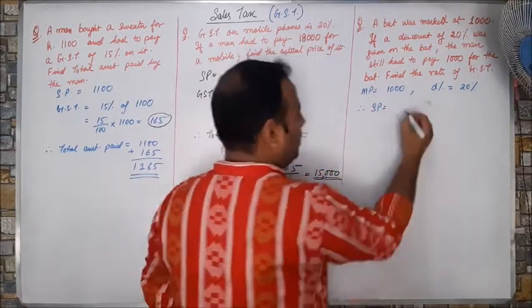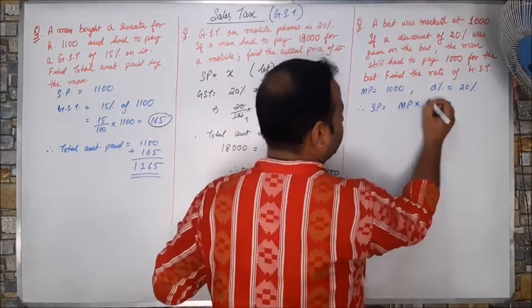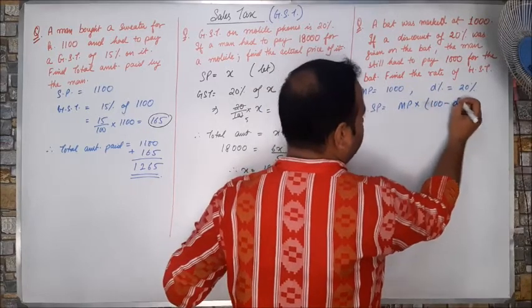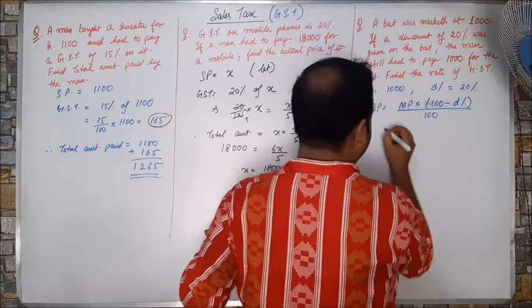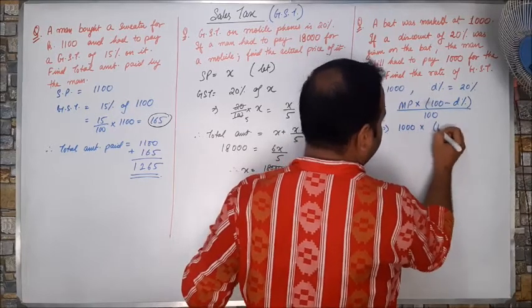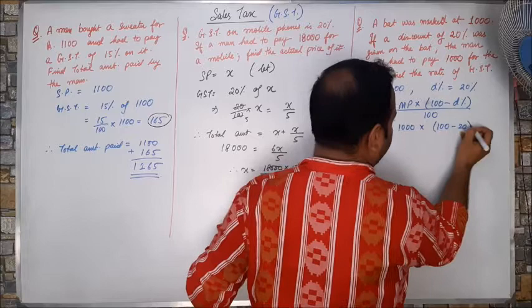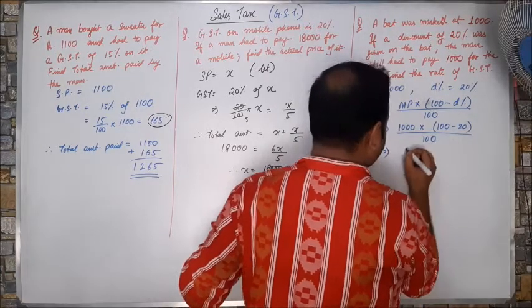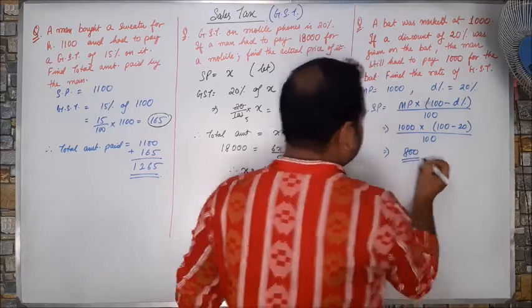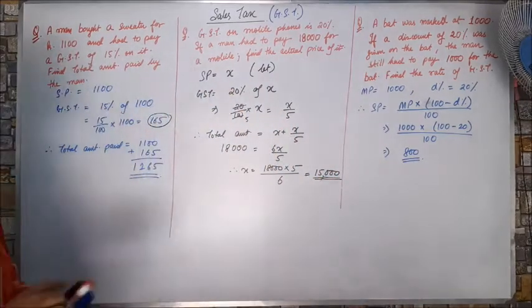So therefore, the selling price will be equals to MP into 100 minus discount percent by 100. That is equals to 1000 into 100 minus 20 by 100. On solving, I will get this as 800. So 800 is my selling price.